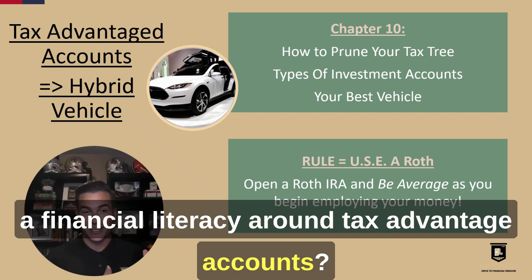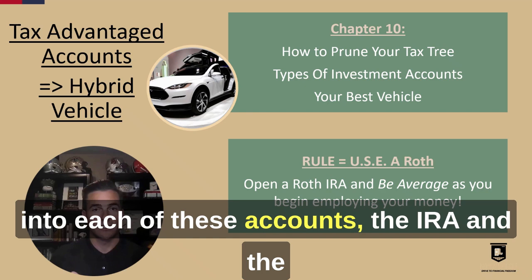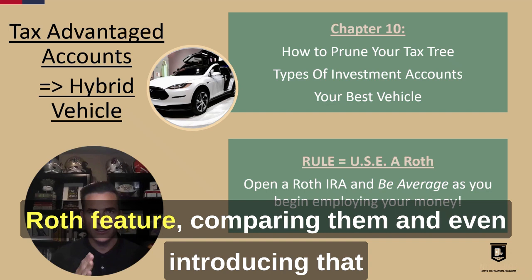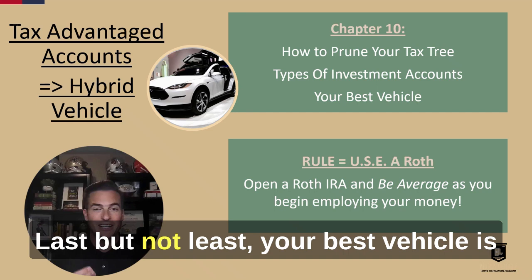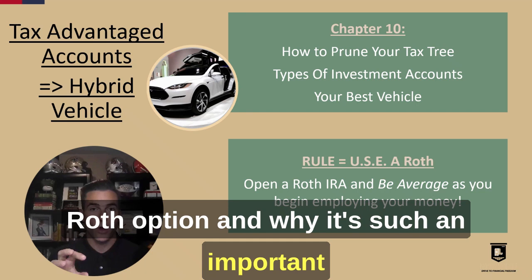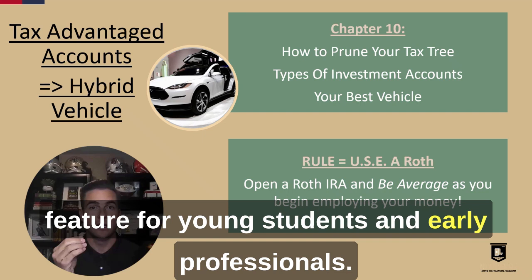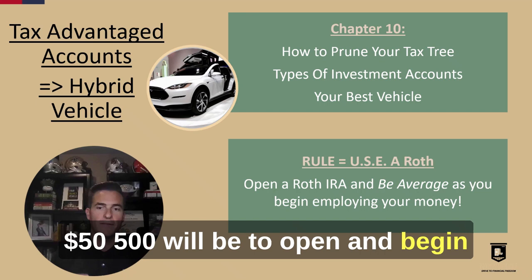10.2 will dive into each of these accounts — the 401k, the IRA, and the Roth feature — comparing them and even introducing that employer match that everybody is so curious about. Last but not least, your best vehicle is going to be a section focused on that Roth option and why it's such an important feature for young students and early professionals. The action item walkaway: with $5, $50, or $500, open and begin their Roth IRA.